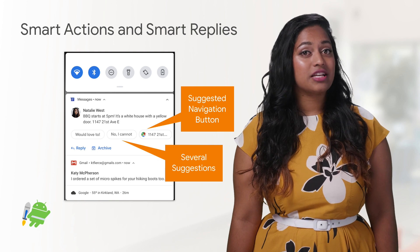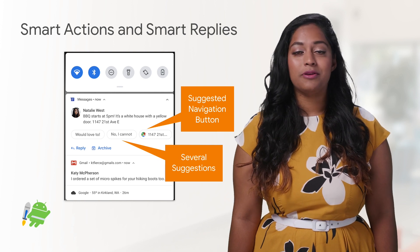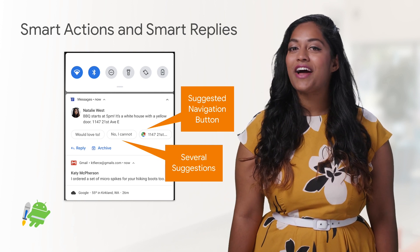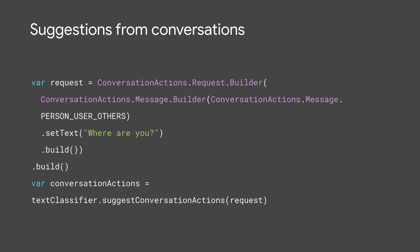You can add these features to other parts of your app using the Text Classifier API. You can analyze a list of messages to see if there are any suggested actions or replies by calling SuggestConversationActions with conversation text on a background thread. This feature is powered by an on-device machine learning model so that text never leaves the user's phone.